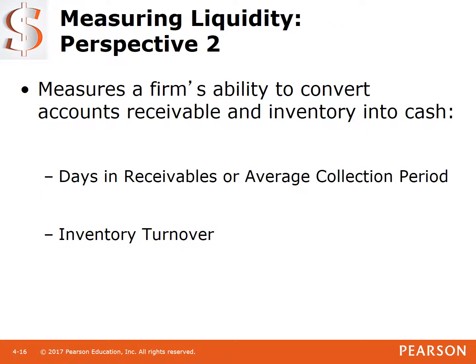Another perspective is how well we convert other assets into cash. For accounts receivable, how long does it usually take us to collect our cash? We call that days in receivables. And how often do we sell our inventory? Because in a retail or manufacturing business, we make money by selling inventory. That's called inventory turnover. Those are our next set of ratios.